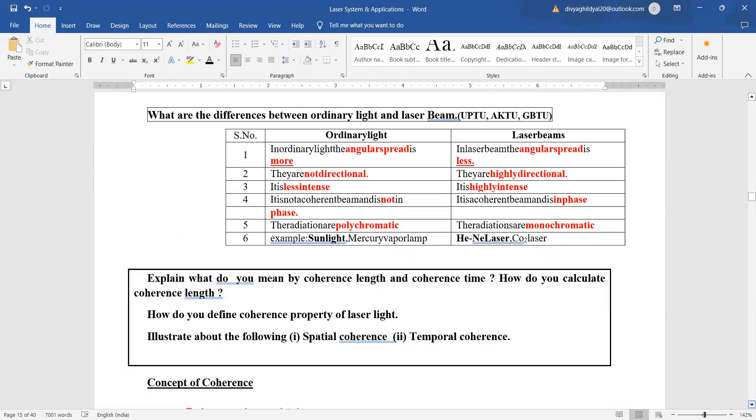So laser light and ordinary light what is the difference? In ordinary light our angular spreading is more whereas in laser light the angular spreading is less. Ordinary light is not directional whereas laser light is highly directional. Ordinary light is less intense whereas laser light is highly intense. Ordinary light is not in phase whereas laser light is in phase. Examples of ordinary light sunlight, mercury vapour lamp etc. Laser beam is emitted by you can state any laser like helium neon laser carbon dioxide laser etc.